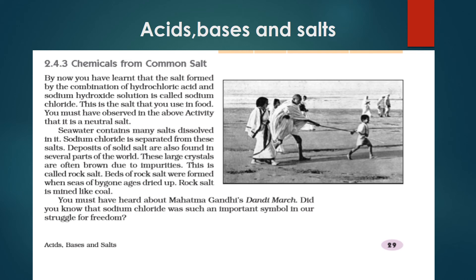Sea water contains many salts dissolved in it. Sodium chloride is separated from salt deposits found in several parts of the world. These large crystals are often brown due to impurities and are called rock salt. Beds of rock salt were formed when seas of bygone ages dried up. Rock salt is mined like coal. You must have heard about Mahatma Gandhi's Dandi March — sodium chloride was an important symbol in our struggle for freedom.